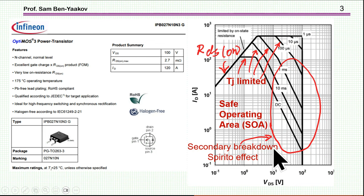It's a typical SOA plot. We see here the current, the drain current, the drain to source voltage. This is for this transistor. It's an Infineon MOSFET, 100 volt maximum, 2.7 milliohm, and it has a 175 degree Celsius junction temperature maximum.